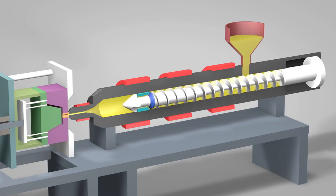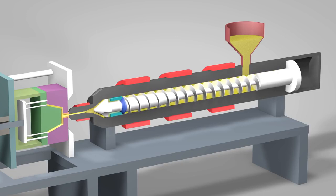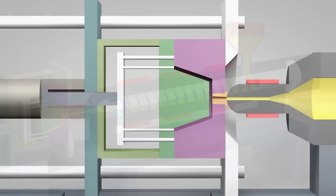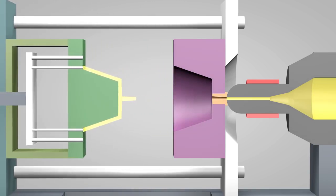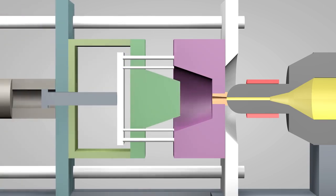Once enough molten plastic is in front of the screw, it rams forward like the plunger of a syringe. In a matter of seconds, the screw injects the molten plastic into the empty part of the mold called the cavity image. The plastic solidifies in under a minute. The mold opens and the part is ejected. The mold then closes and the process repeats.